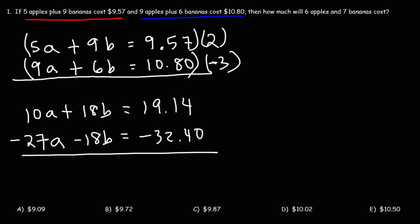Now at this point, we can add the two equations. Starting with the first column, we have positive 10 plus negative 27. That's the same as 10 minus 27. So that's going to give us negative 17 and then times A. Positive 18B plus negative 18B, that adds up to 0. So they cancel.